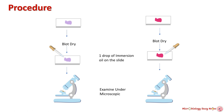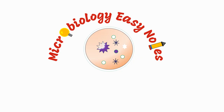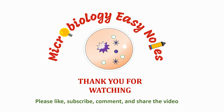Examples of gram-positive bacteria include Bacillus anthracis, Clostridium botulinum, Enterococcus faecalis, Mycobacterium tuberculosis, and Staphylococcus aureus. Examples of gram-negative bacteria include Escherichia coli, Salmonella typhi, Pseudomonas aeruginosa, Vibrio cholerae, and Yersinia pestis.